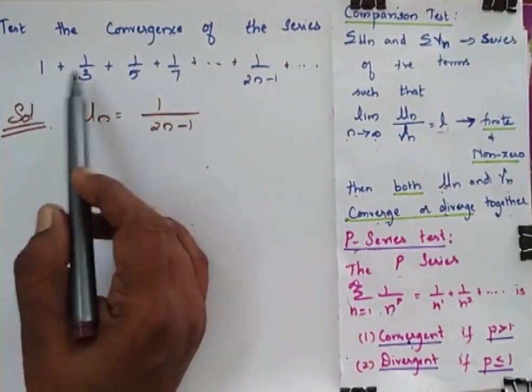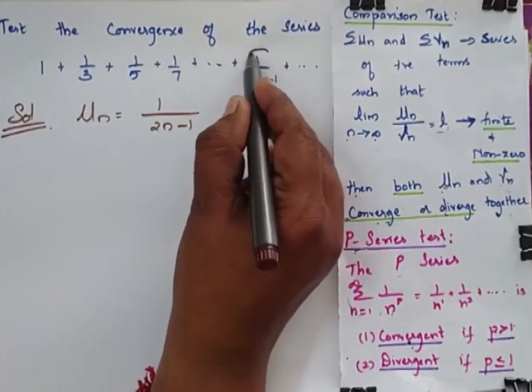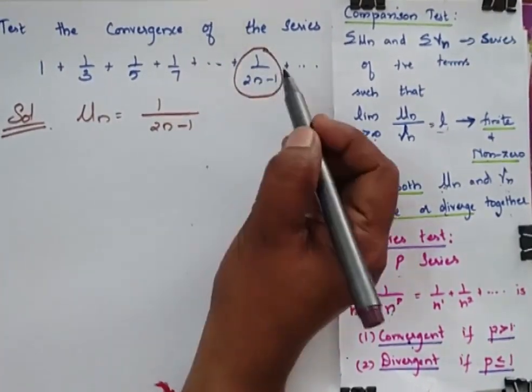Test the convergence of this series: 1 plus 1 by 3 plus 1 by 5, etc., where you have your general term as 1 by 2n minus 1.